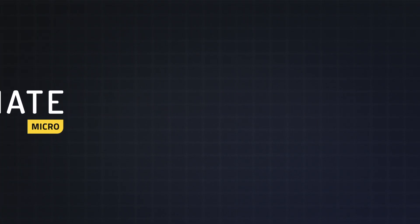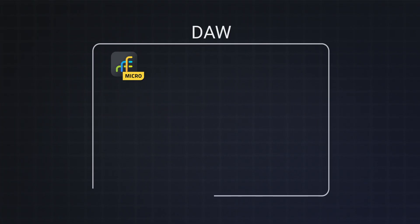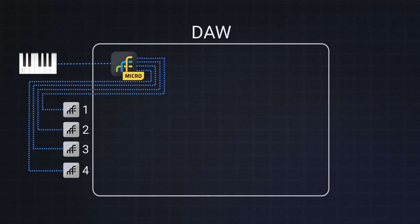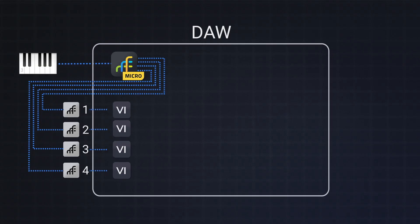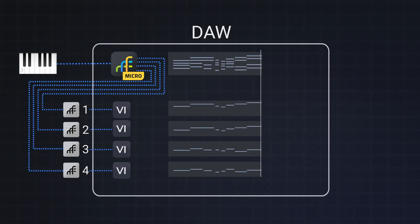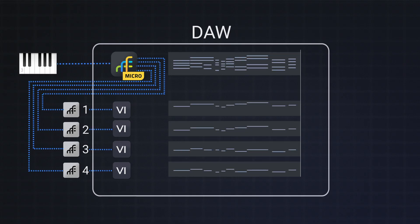Divisimate Micro runs as an instrument plugin in your DAW of choice and connects to four virtual MIDI ports. Your MIDI input gets into the plugin from your controller, just like any other track. It is then processed, split up, and sent to the Divisimate ports. These ports can then be used as an input device on any instrument track within the same project. You can now just record both your keyboard input and the individual parts live right onto the tracks in your DAW.